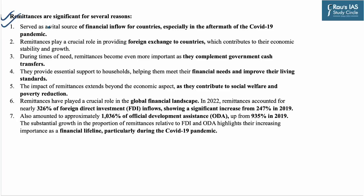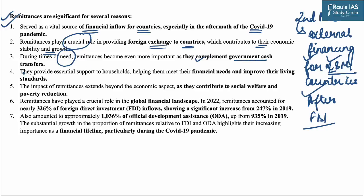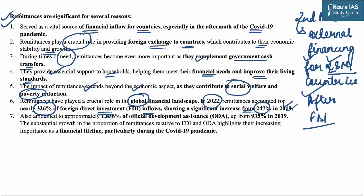Remittances are vital as a source of financial inflow, especially in the aftermath of COVID-19. They play a crucial role in providing foreign exchange, contributing to economic stability and growth. Remittances are the second most important source of external financing for low- and middle-income countries after FDI. During times of need, remittances complement government cash transfers and provide essential support to households, improving living standards. Their impact extends beyond economics, contributing to social welfare and poverty reduction. In 2022, remittances accounted for 326% of FDI inflows — up from 247% in 2019 — and approximately 1,036% of official development assistance, up from 935% in 2019.